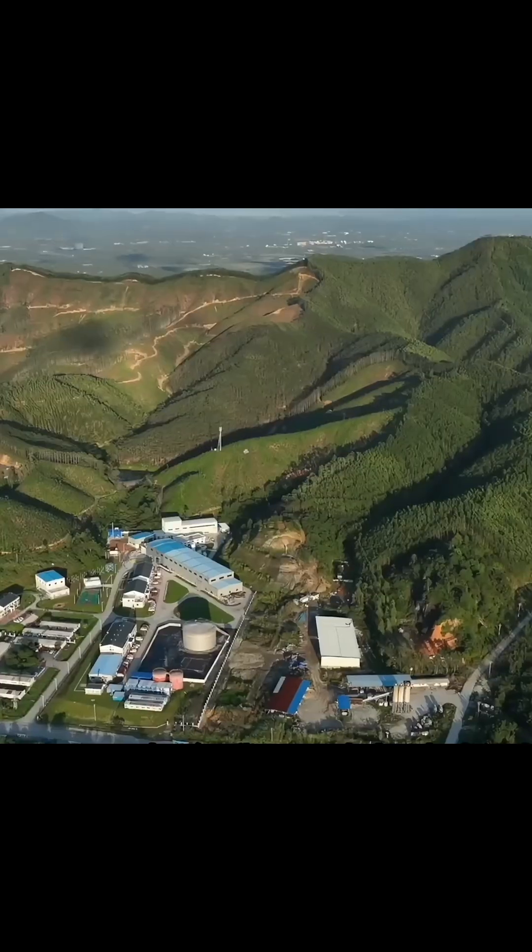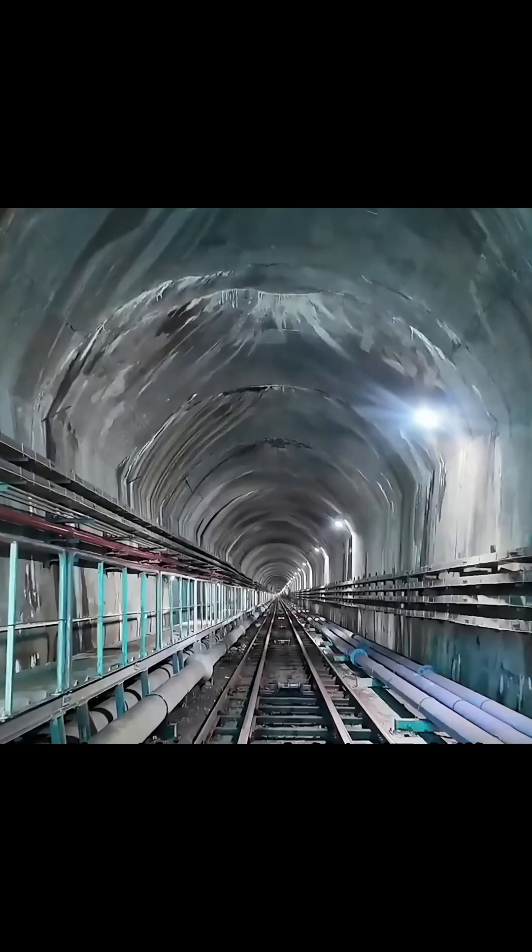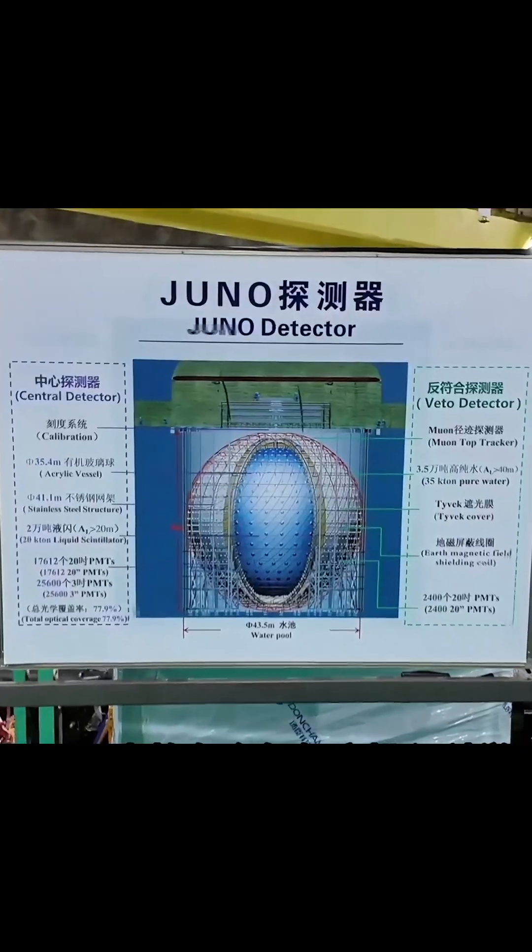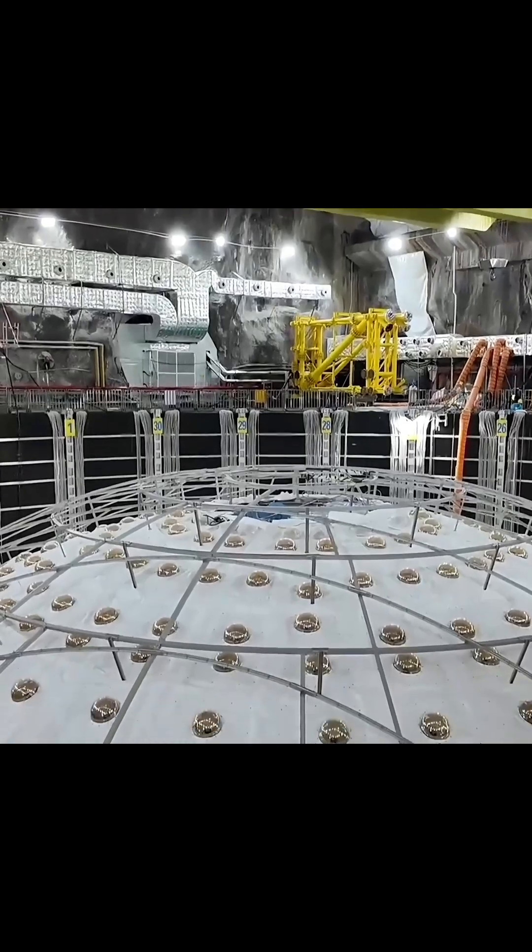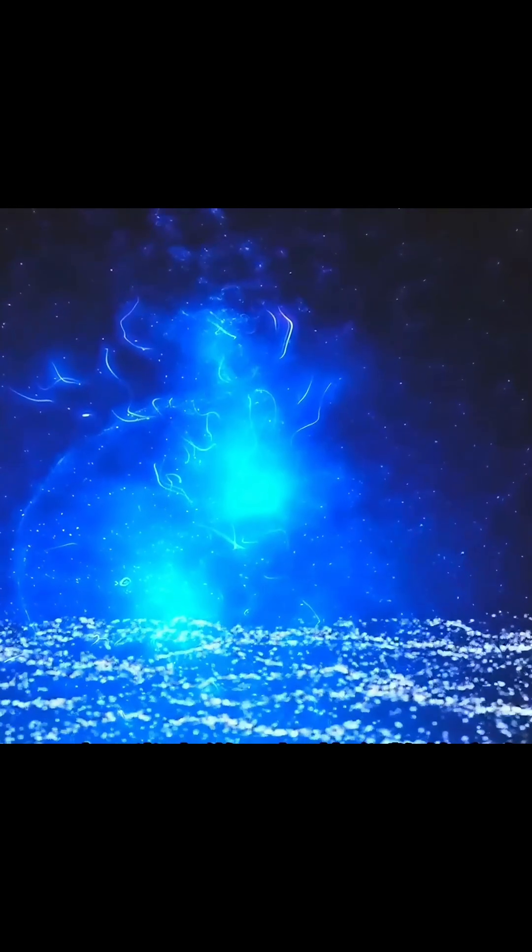Today, China's Jiangmen Underground Neutrino Observatory, Juno, 700 meters underground, is scheduled to begin research. It aims to be the first to determine the neutrino mass ordering and will measure oscillation parameters to an unprecedented 1% precision.